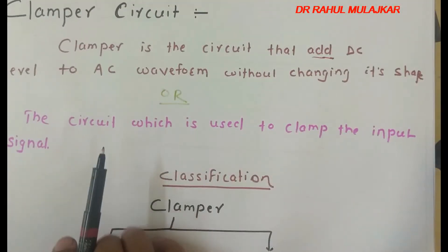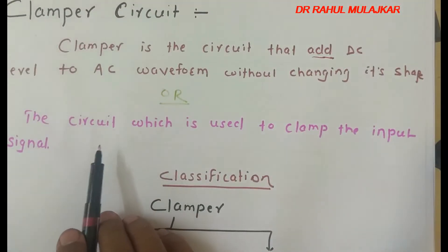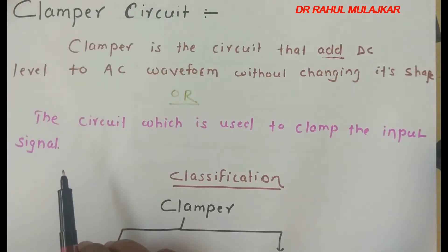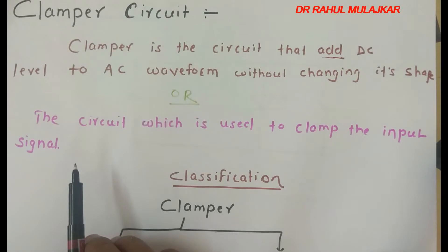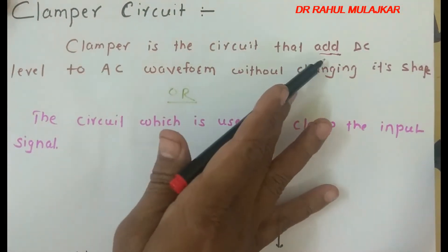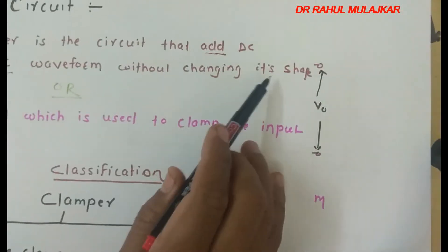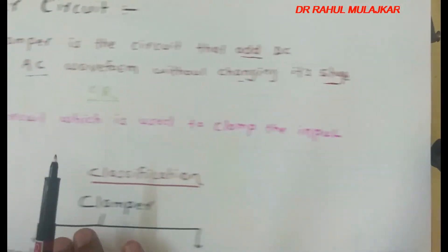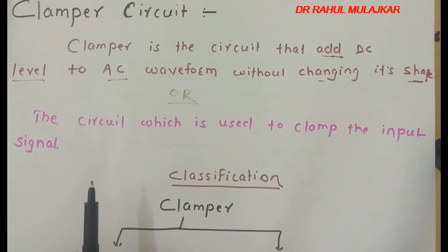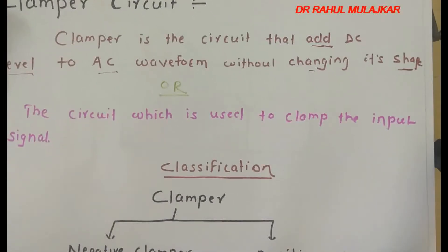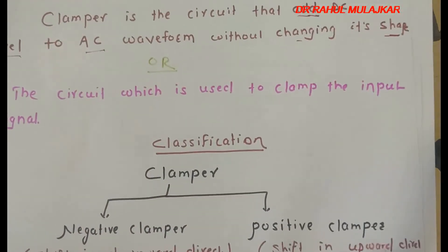The clamper is used to clamp input signals. Most electronic components work on DC supply, but when you amplify signals, the DC content may be removed. So to add a particular DC level we use a clamper circuit. The important point is that it adds DC level to the AC waveform without any change in the shape of the waveform.